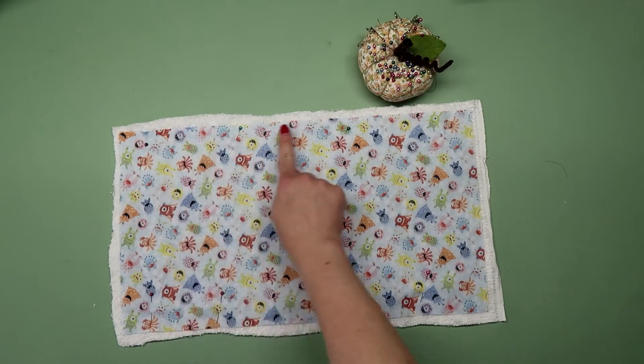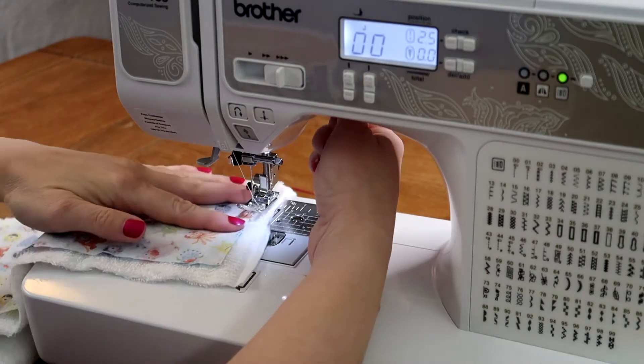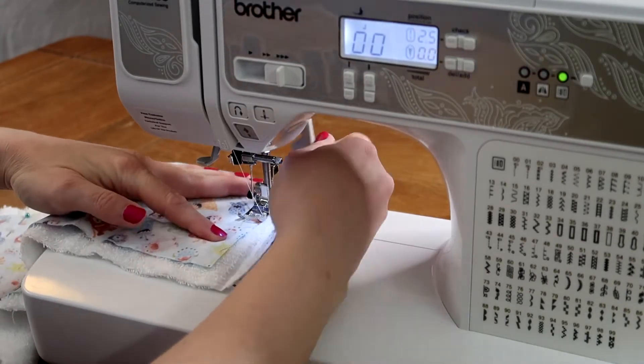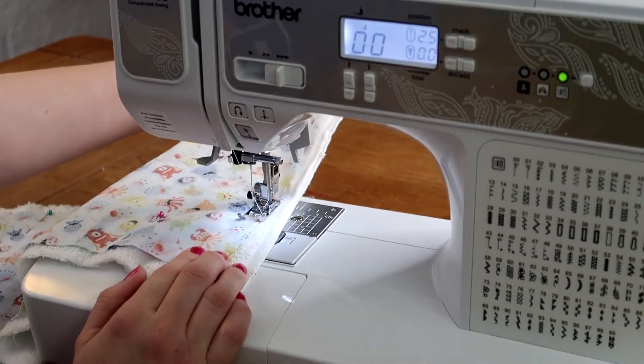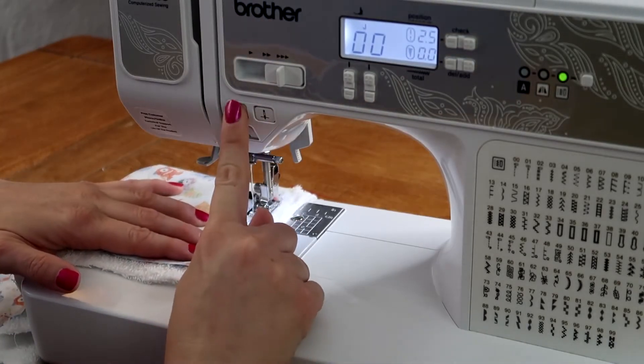Then stitch around the edge with a half inch seam allowance and leave a three inch gap to turn it right side out. I'm using the edge of my presser foot as a guide. Don't forget to backstitch when you start sewing.